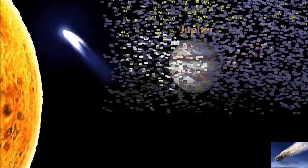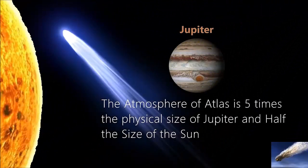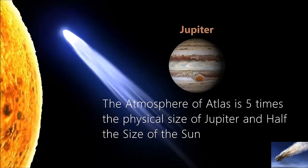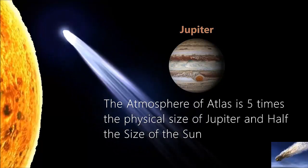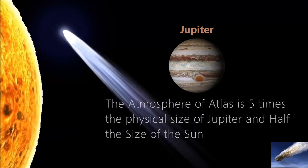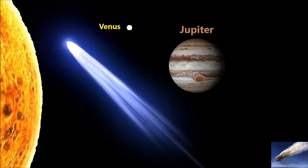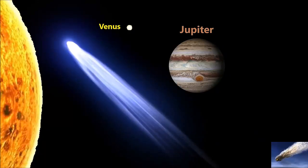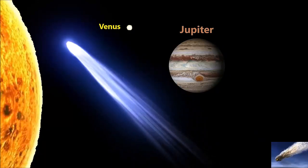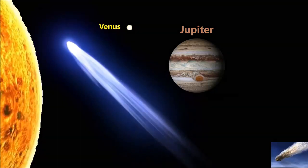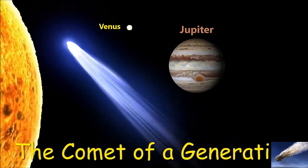The atmosphere of Atlas is five times the physical size of Jupiter and about half the size of the Sun. By the end of this month, the comet may appear brighter than the planet Venus in the night sky. As it approaches the inner solar system, it will be one of the brightest objects in the night sky. It will become the comet of a generation.